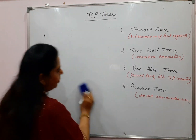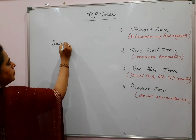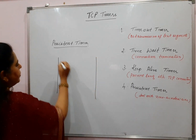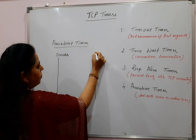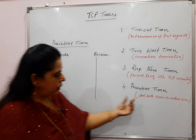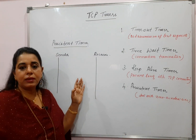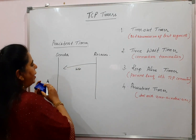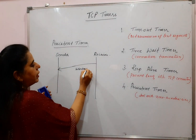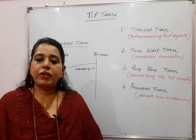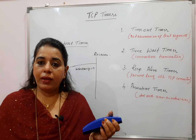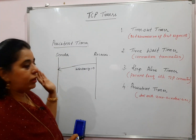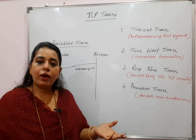The fourth type of timer is called the persistent timer. Under which situation is this persistent timer used? It deals with a zero window size. The persistent timer is used when the receiver sends a segment with a window size equal to zero. When the receiver sends a segment with window size zero, it means the receiver is saying: I don't have capacity in my buffer to receive any data from you — my window size is zero, so please do not send any data. But definitely the window size will not be zero always.